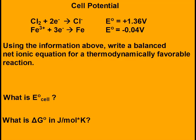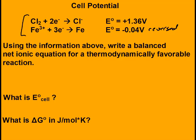When writing a balanced net ionic equation for a thermodynamically favorable reaction given standard reduction potentials: the more positive half reaction stays as written; the more negative one gets reversed (oxidized). Multiply reactions so electrons cancel — in this case, multiply the top by 3 and the bottom by 2. Your electrons can't appear in the final reaction. So we get: 6e⁻ + 3 Cl₂ + 2 Fe → 3 Cl⁻ ions + 2 Fe³⁺ ions + 6e⁻. The electrons cancel out. If they don't, something is wrong.